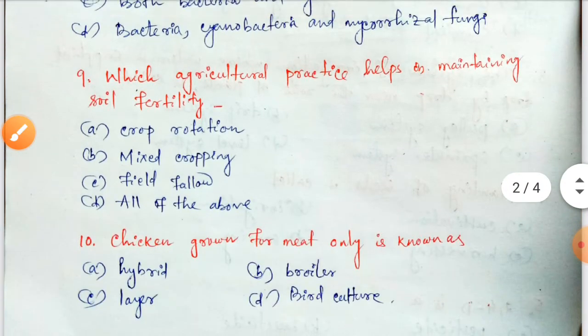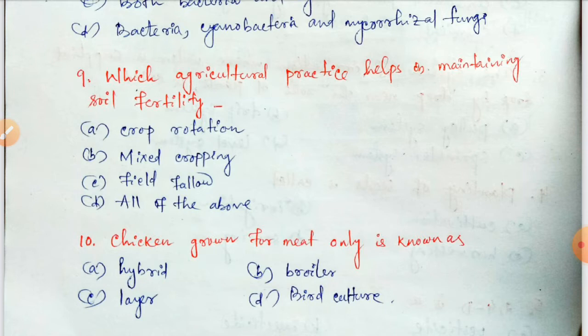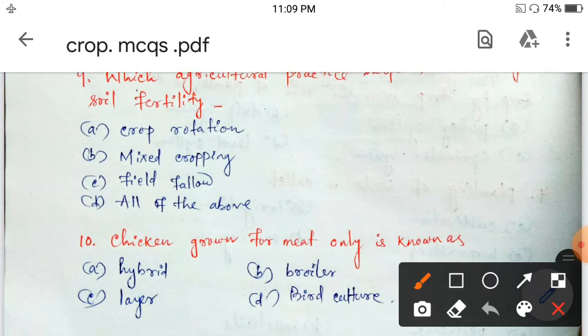Next question: which agricultural practice helps in maintaining soil fertility? The options are crop rotation, mixed cropping, field fallow, or all of the above. All these practices are used to maintain soil fertility. So option D is correct.